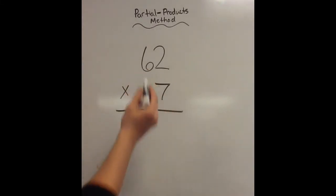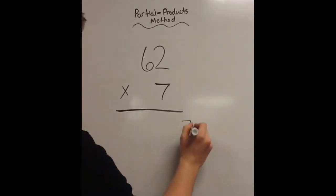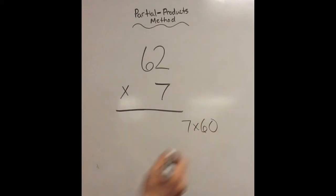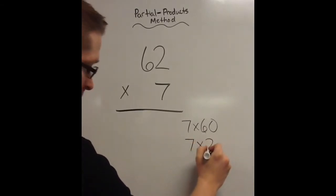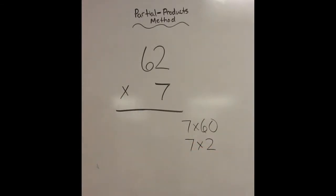First of all, 7 times 6 is not actually the problem that we're going to be solving. Instead, it's going to be 7 times 60. So I'll actually go ahead and I'll write this over here, just as a reminder to me that this is the problem that I'm solving. And then 7 times 2. Now, as you get better at this, you don't necessarily have to write these over here. But what it ends up coming out to be is, I know 7 times 6 is 42. So 7 times 60 must be 420.